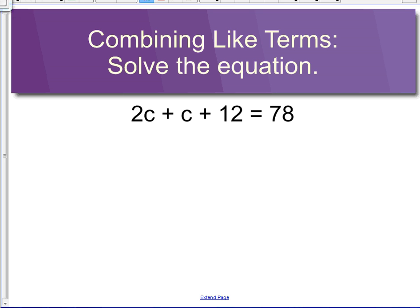In this particular equation, the like terms would be 2c and c, and the other like terms would be positive 12 and 78. Your goal is to get the c's on one side and the numbers on the other side, but first we have to combine them. So our first step would be to add 2c plus c, which would be 3c.